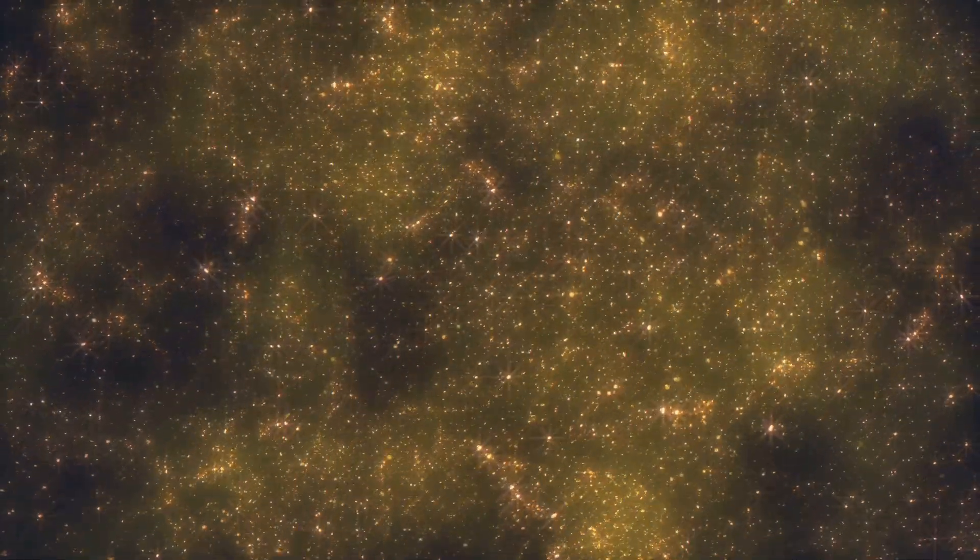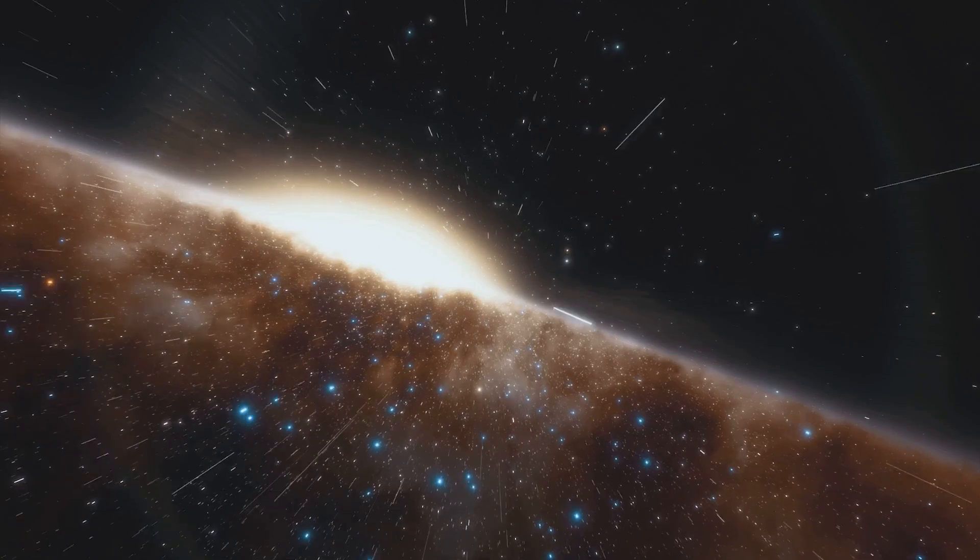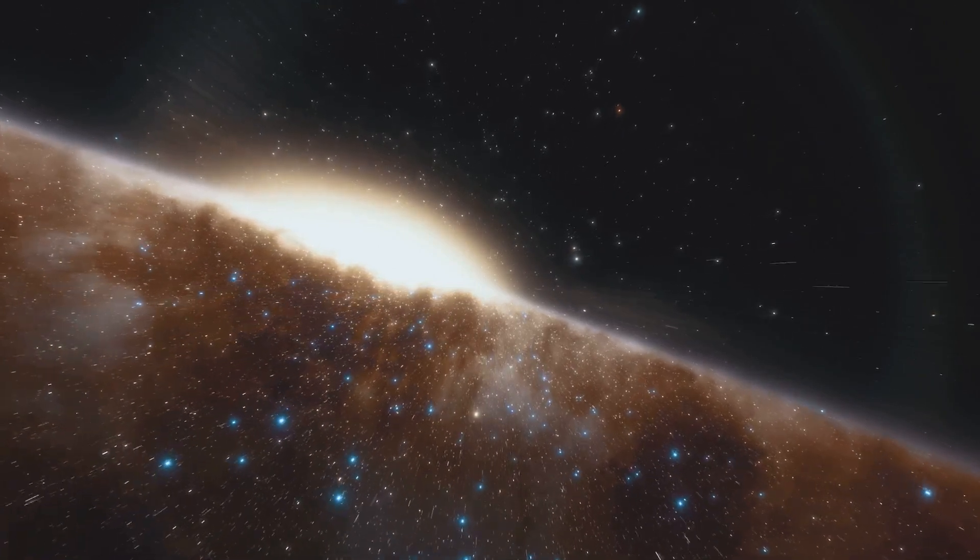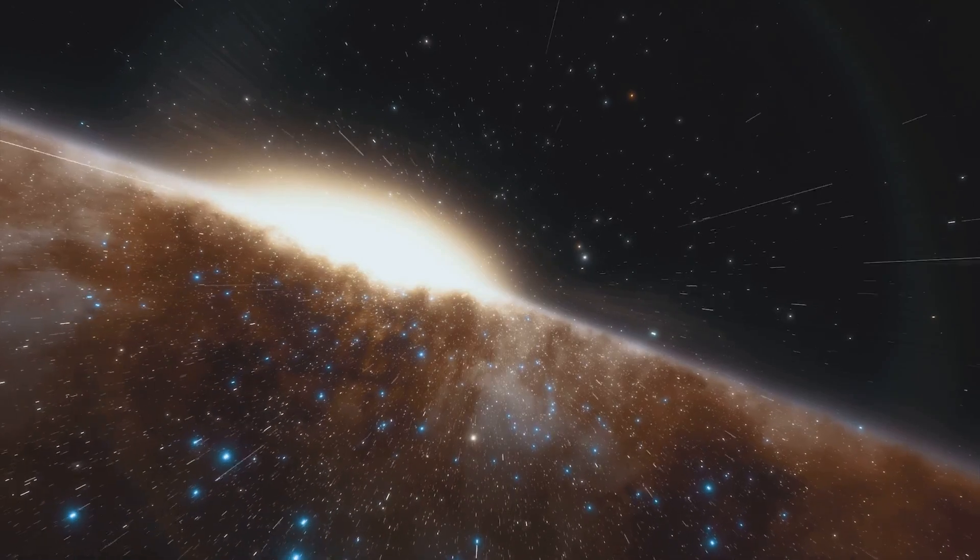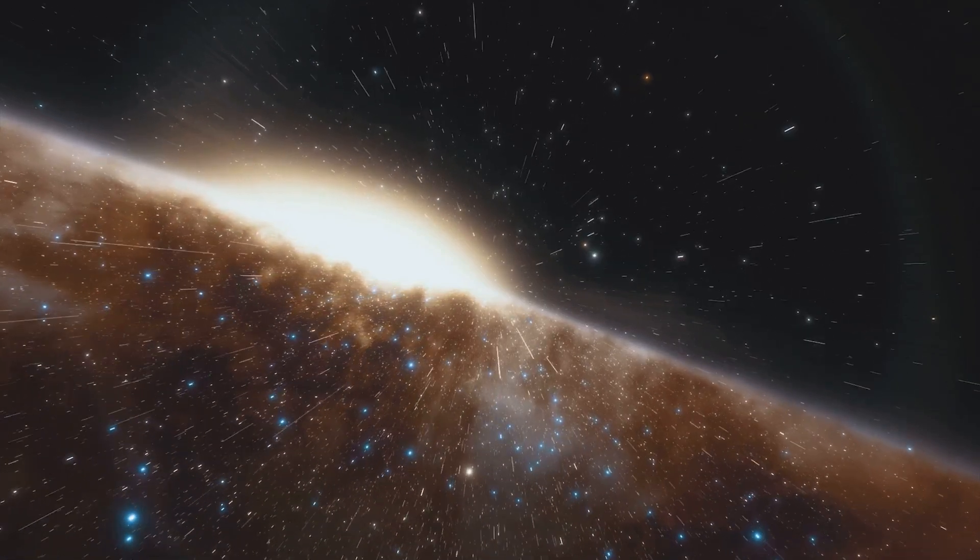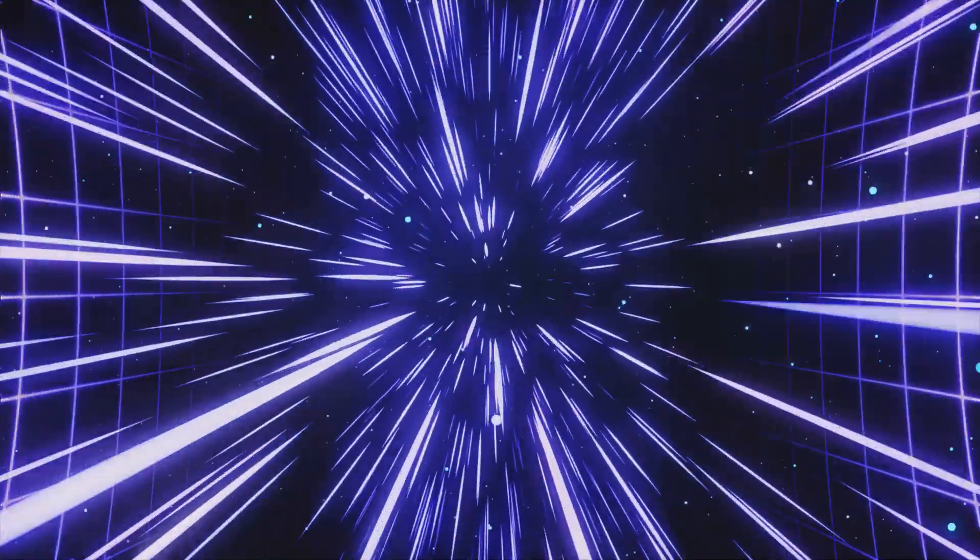This incredible speed of light is not just a fascinating fact, it's a fundamental principle of our universe. It's woven into the very fabric of space and time, influencing everything from the structure of galaxies to the behavior of atoms. But what's even more amazing is that this speed is always constant in a vacuum, regardless of your perspective. Whether you're standing still or moving at thousands of kilometers per hour, light will always seem to move away from you at that same incredible speed.